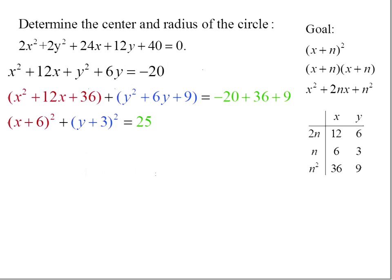When we factor x² + 12x + 36, we get (x + 6)(x + 6), or (x + 6)². And for y, we'd have (y + 3)². And we add our 3 terms to get 25.